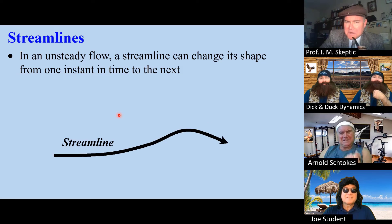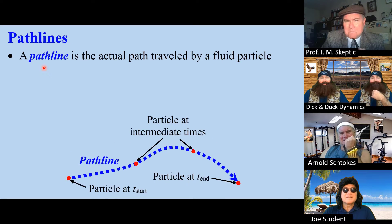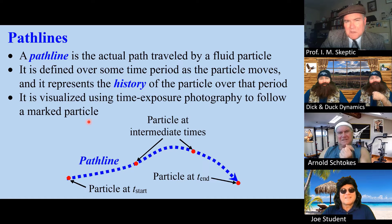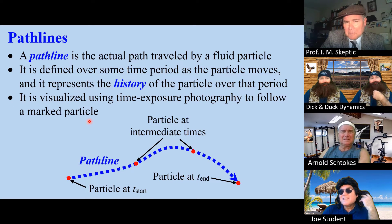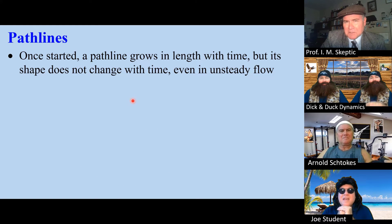This is illustrated here at several different instances in time. A pathline is the actual path traveled by a fluid particle. It is defined over some time period, and it represents the history of that particle over that period of time. It is visualized by time exposure photography as you follow a particular particle, say a glowing particle. Once started, a pathline grows in length over time, but its shape does not change, even if the flow is unsteady.